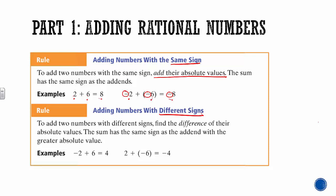When your numbers have different signs, your answer is going to be the sign of the bigger number. So negative 2 and 6 — since 6 is bigger, your answer is going to be positive. Same thing with 2 and negative 6 — 6 is still bigger, but this time it's negative, so your answer has to be negative. You're finding the difference of their two absolute values.